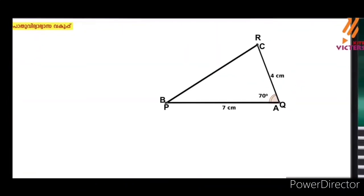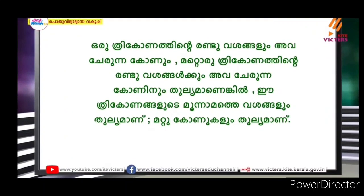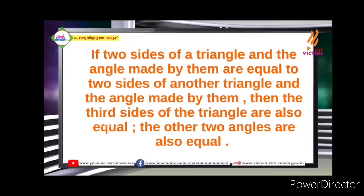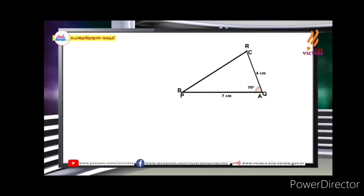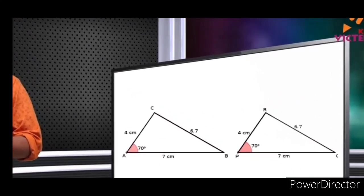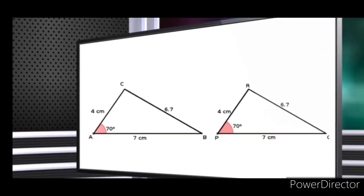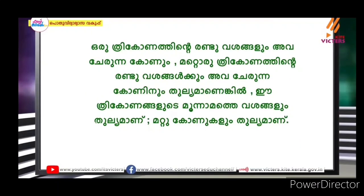This triangle is BC = 1.7 in triangle ABC. The two sides of the triangle and the angle made by them are equal to the two sides of another triangle and the angle made by them. Then the third side of the triangle is equal. The two angles are also equal.